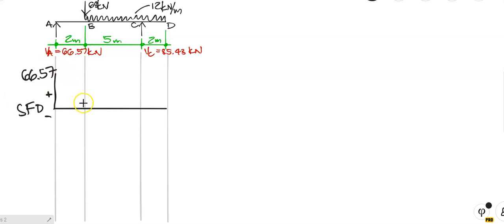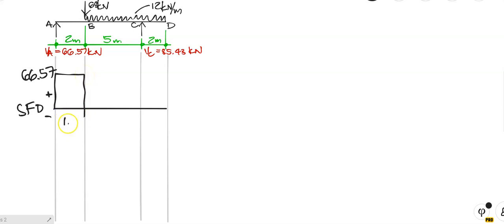Notice — on the shear force diagram, where we have no load, we have a straight horizontal line. So all the way across there we have 66.57. What's happening at B? I've got a downward load of minus 68. So I pick up my calculator: 66.57 minus 68 gives me minus 1.43. The minus sign means plotted just below the zero line, with a value of 1.43.